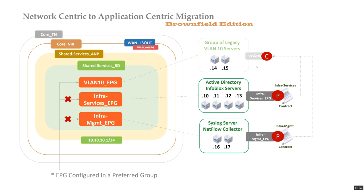You can also take it a step further: now that I've created the base infra services EPG, I can create micro-seg EPGs to go one level deeper and separate Active Directory servers from Infoblox servers. I'd do that with micro-seg policies. Without VMM integration you're limited to IP or MAC address. With VMM integration you can use VM attributes like hostname, tag, and other VMware attributes that are exposed to Cisco ACI and can be used for different classification requirements.